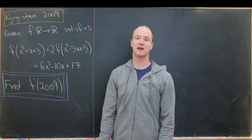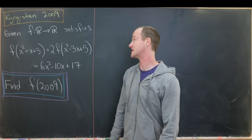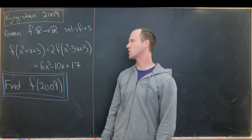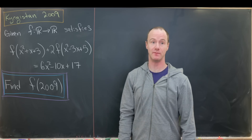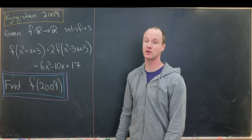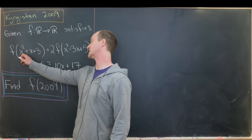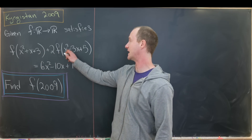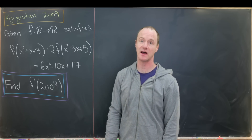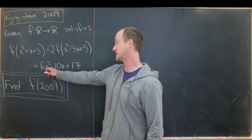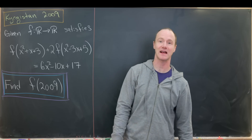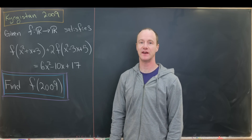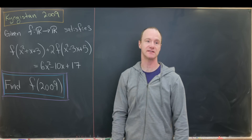Today I've got a nice functional equation type question from a Kyrgyzstan math Olympiad, from the year 2009. We're given a function f and we don't know much about it, but we know it satisfies this functional equation. It takes f(x² + x + 3) plus two f(x² - 3x + 5) and gives us 6x² - 10x + 17. Our goal is to find f evaluated at 2009 — the year of this exam.